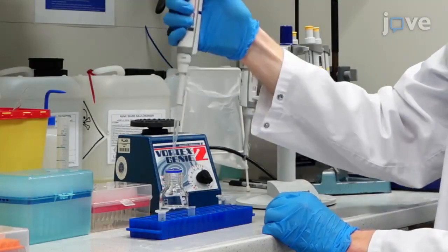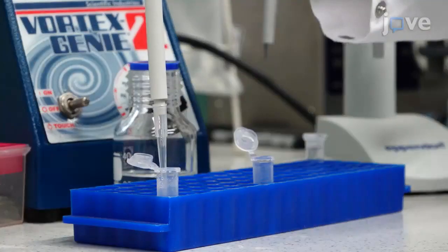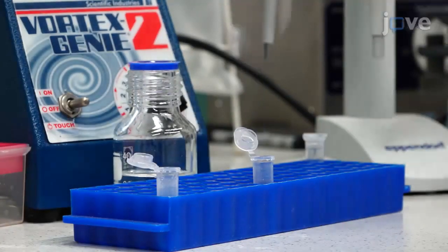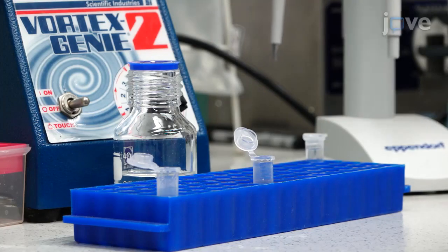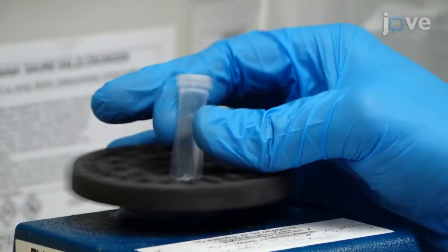Mix 200 microliters of this concentrated solution with 1250 microliters of a 2 to 1 chloroform and methanol mixture. Vortex the solution to mix thoroughly.